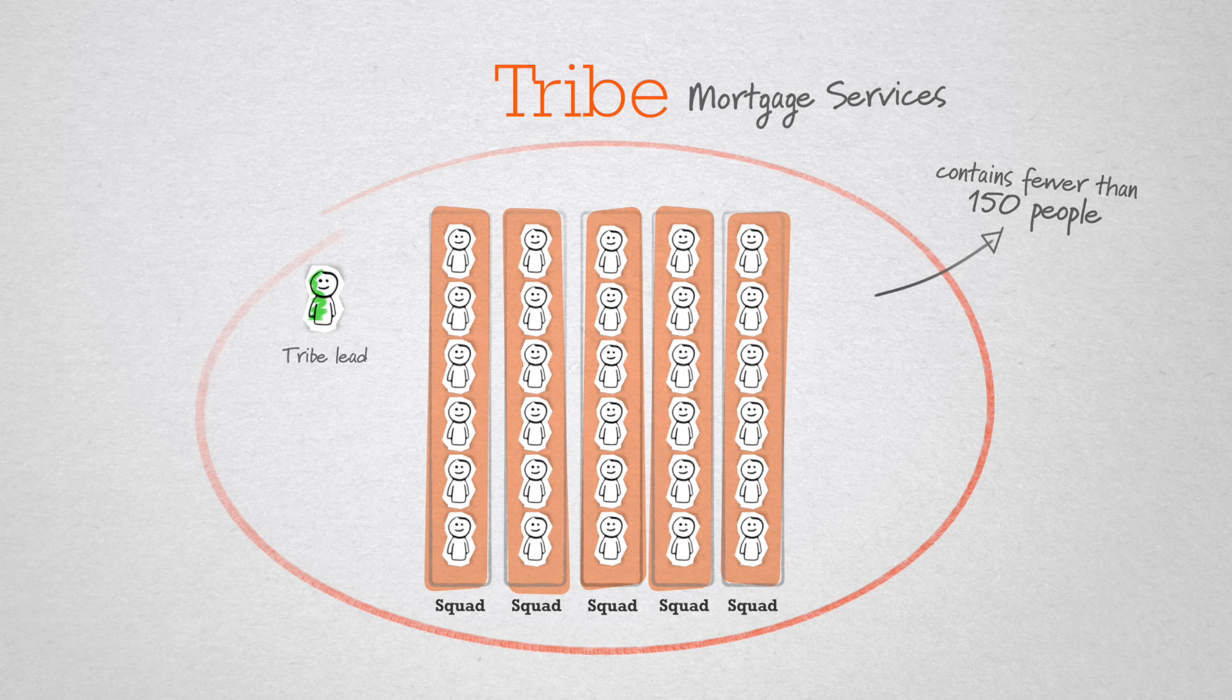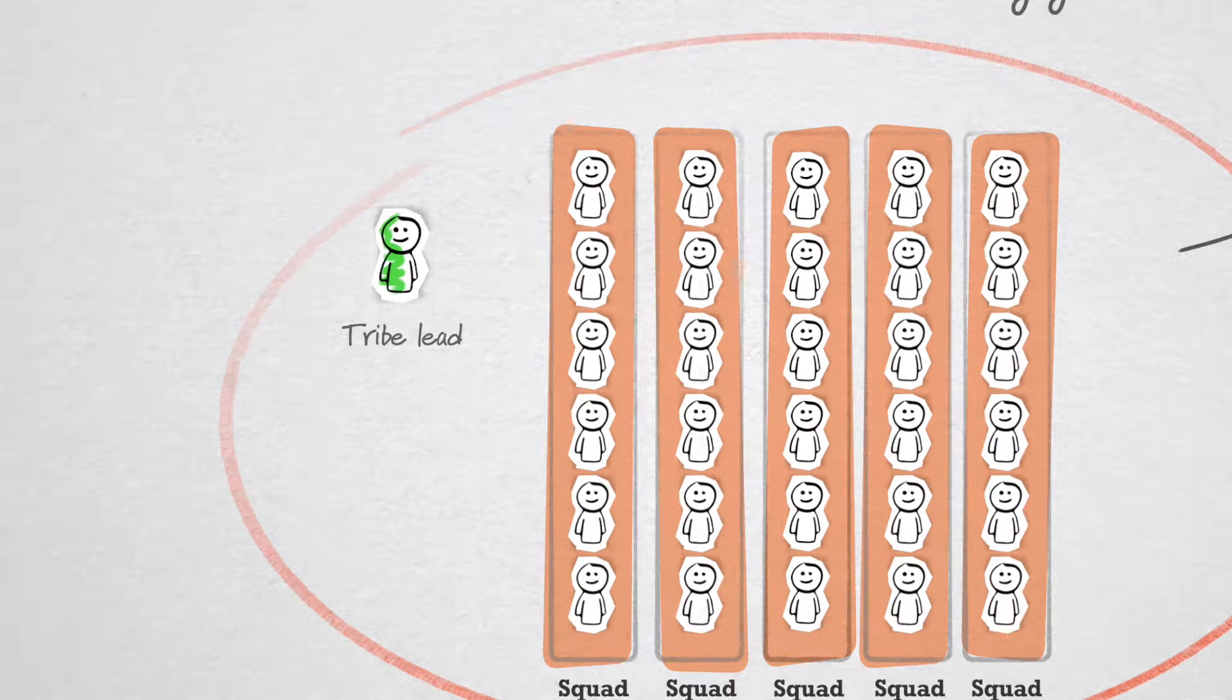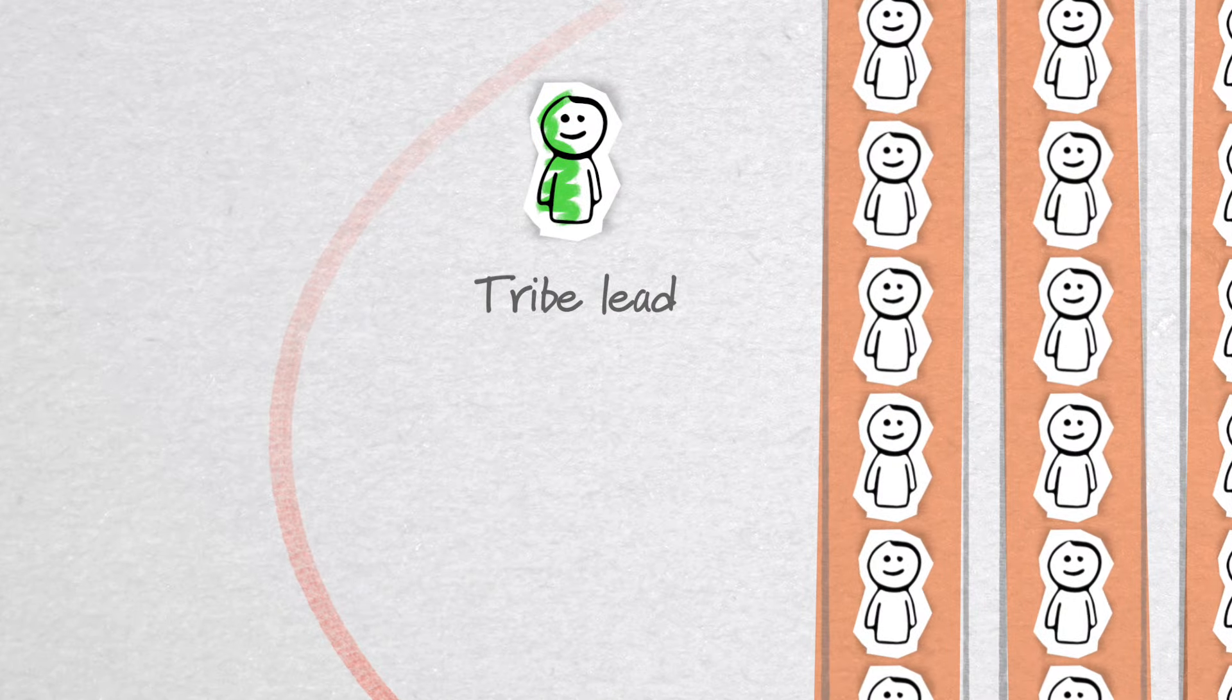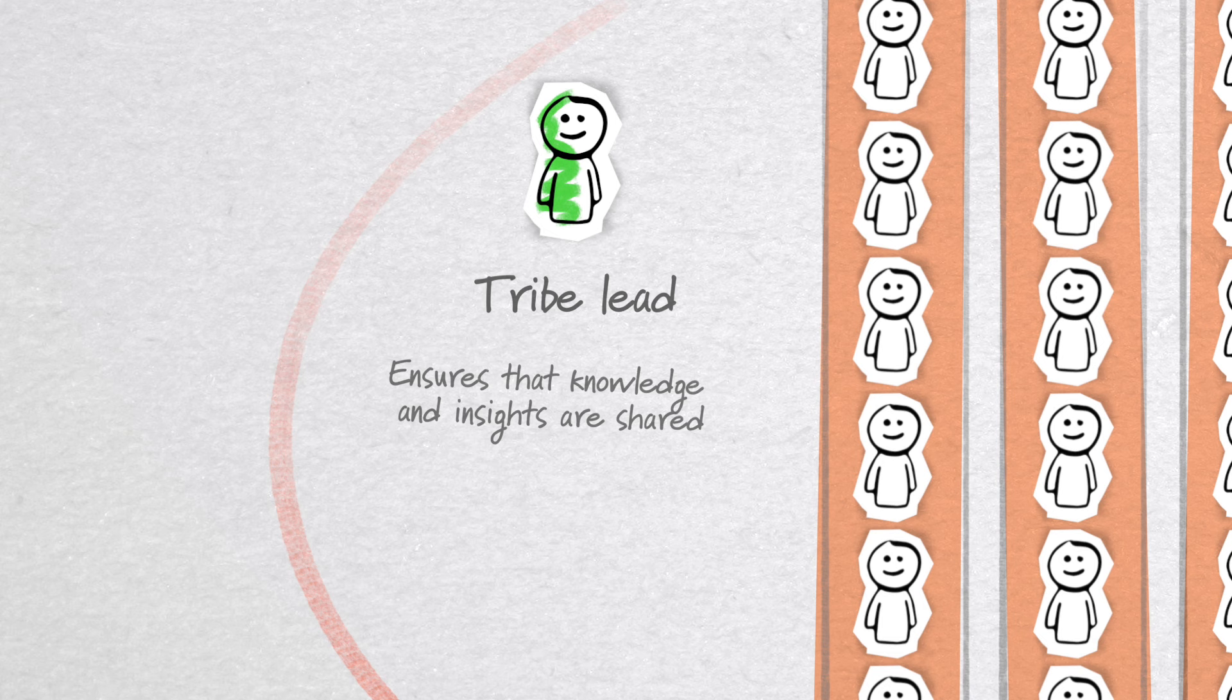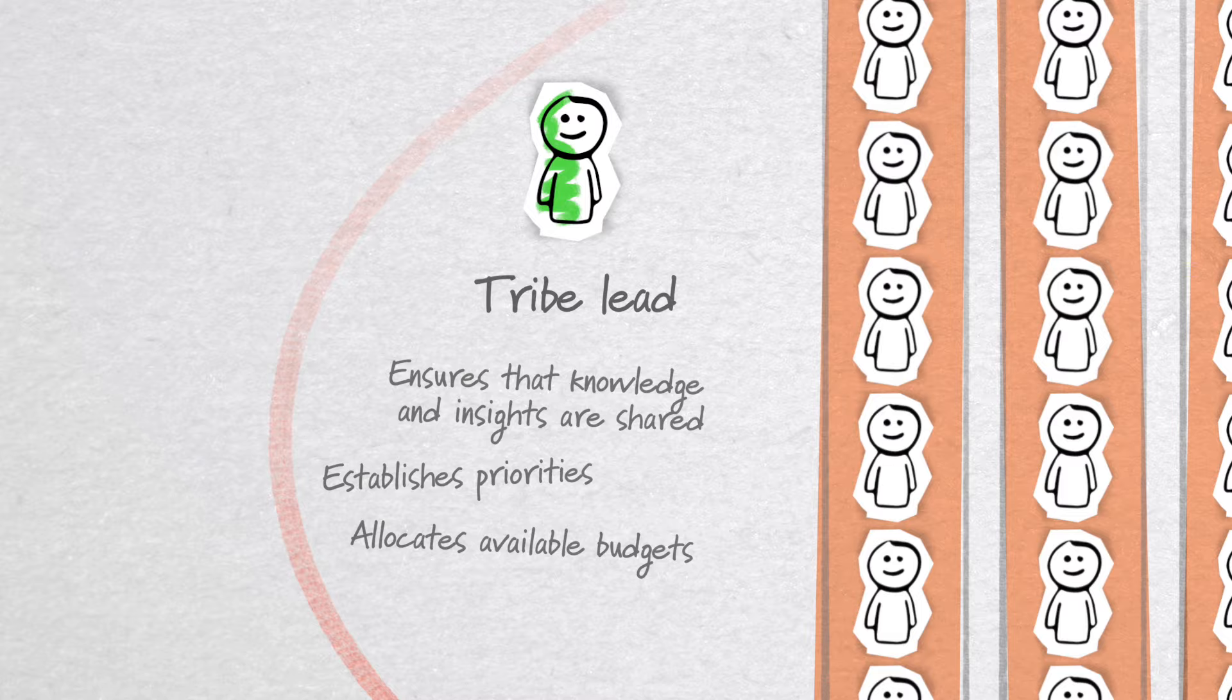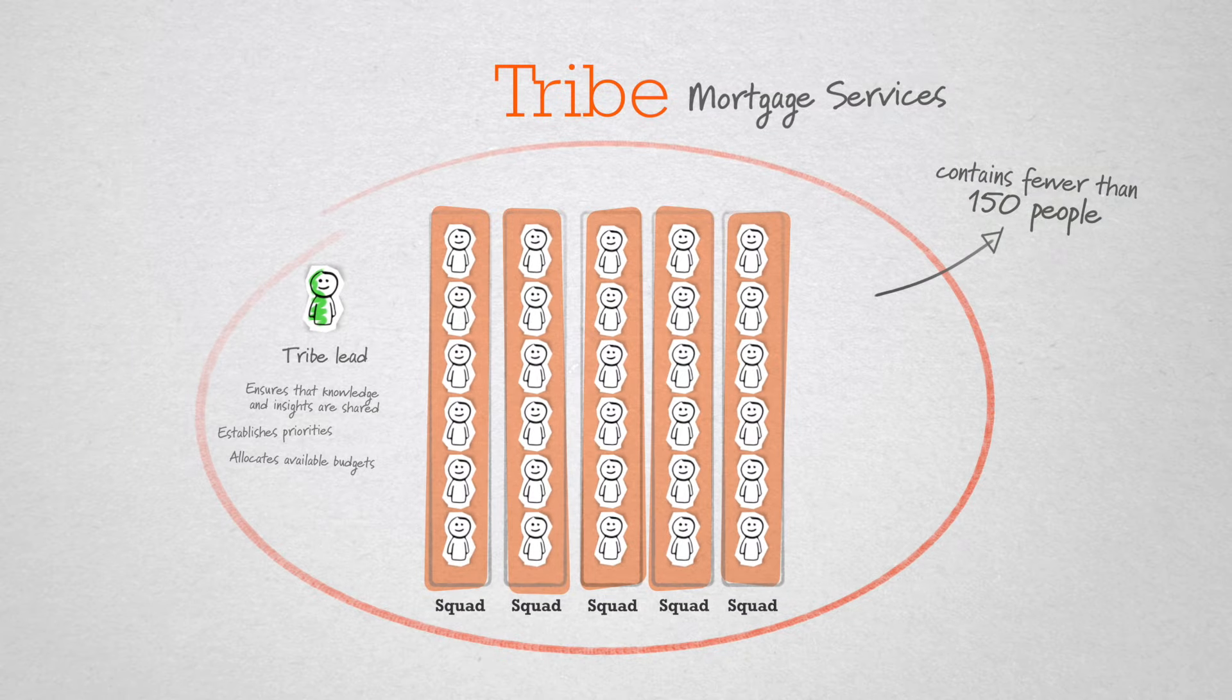Coordinated by the tribe lead, who, although not the traditional boss of all tribe members, ensures that knowledge and insights are shared, establishes priorities, and allocates available budgets. The tribe lead also forms the interface with other tribes.